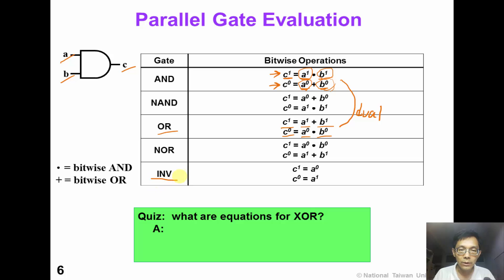When we have an inverter whose input is A and output is C, we can simply exchange A0 and A1 to produce C1 and C0. So we have a short quiz for you. Please write the equations that can evaluate an exclusive OR gate in parallel.